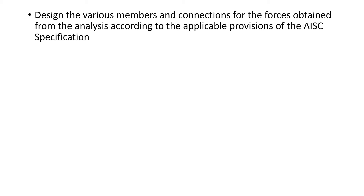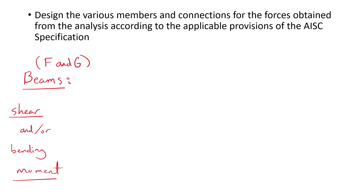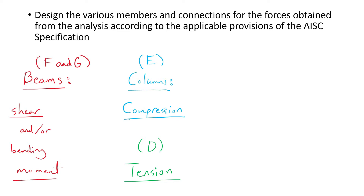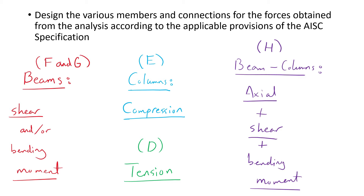The next step is to design the various members and connections for the forces obtained from the analysis according to the applicable provisions of the AISC specification. For beams with shear or bending moment, refer to Chapter F for flexure and Chapter G for shear. For columns under compression only, refer to Chapter E. For members under tension only, refer to Chapter D. For all beam-column members, refer to Chapter H and apply interaction equations H1-1a and H1-1b using an effective length factor K equal to 1.